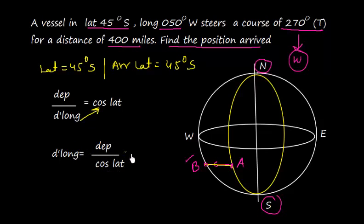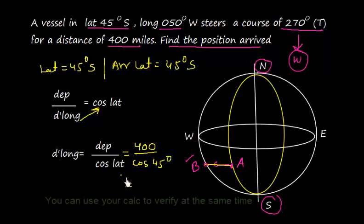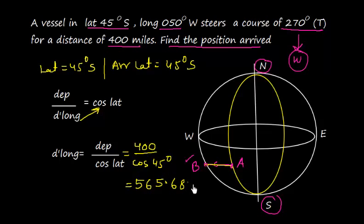Let me put the value. Departure here is the same as the distance, 400, divided by cosine latitude, cosine 45 degrees. So I punch this in my calculator: 400 divided by cosine 45 degrees, I get 565.685 miles or minutes.